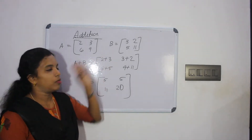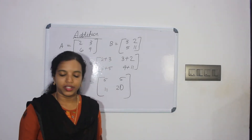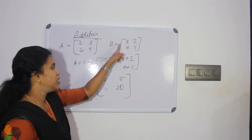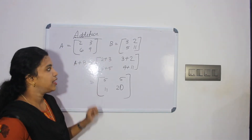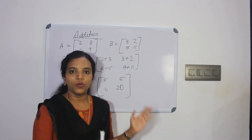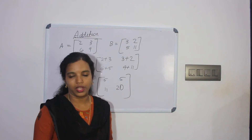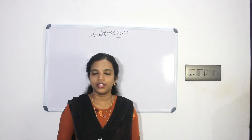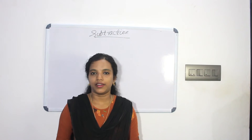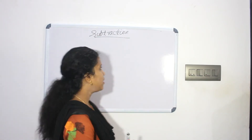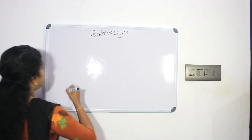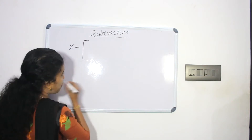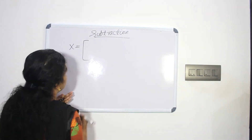Now we will look at matrix subtraction. We add — that is, apply — the same rule of corresponding elements. We will also do subtraction. Next, we will work with a 3x3 matrix for the subtraction example.